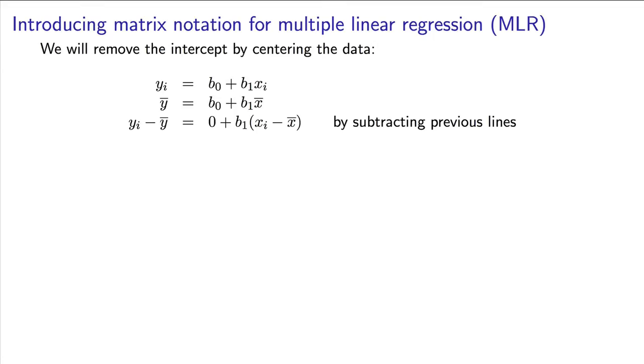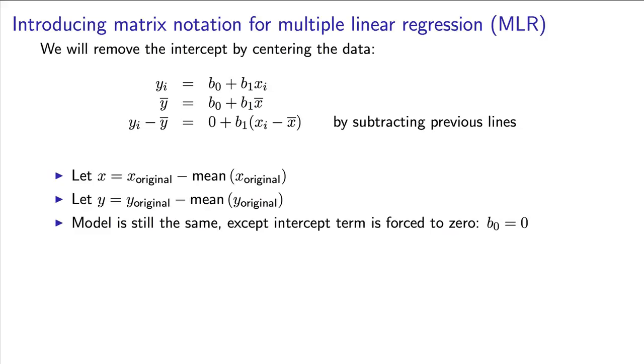Thirdly, we subtract the second line from the first line. This creates a new regression model where our variables are in their centered form. In other words, instead of xi, we use xi minus the mean of all x values. Instead of yi, we use yi minus the mean of the y's.